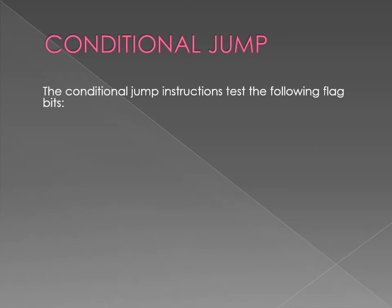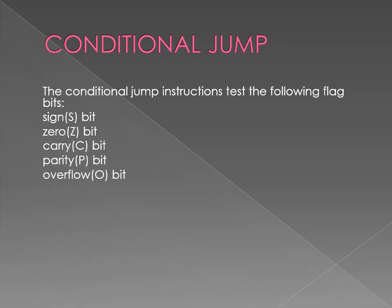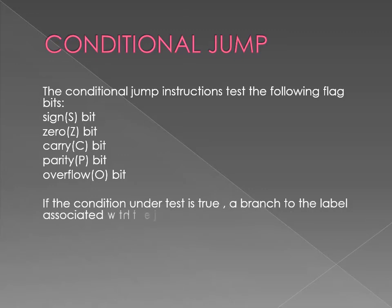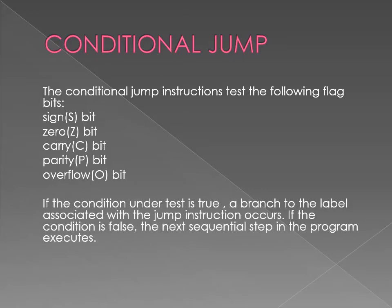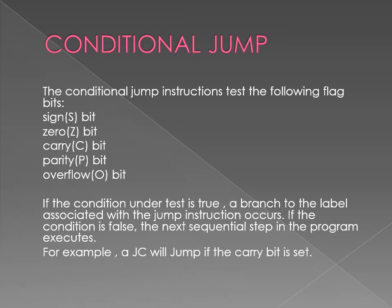The conditional jump instruction tests the following flag bits: sign bit, zero bit, carry bit, parity bit, and overflow bit. If the condition under test is true, a branch to the label associated with the jump instruction occurs. If the condition is false, the next sequential step in the program executes.